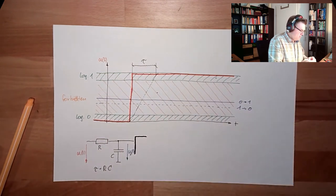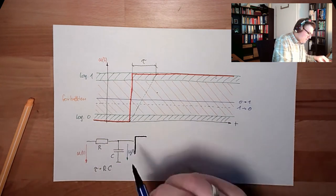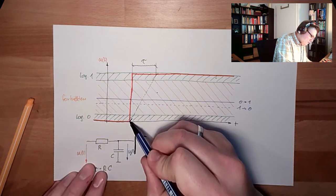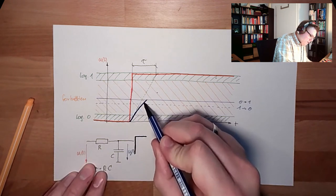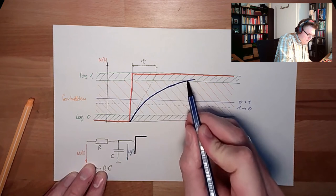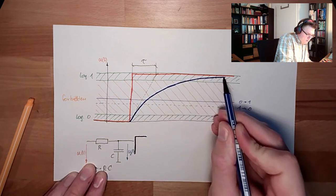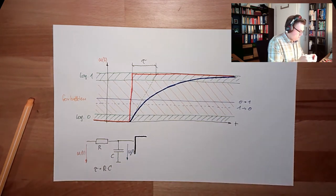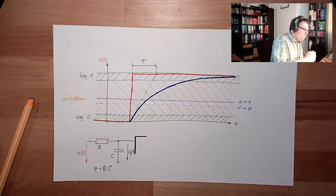And the steepness at the beginning will be exactly this tangent here. So we will end up in a voltage like this. So this is this delayed voltage.